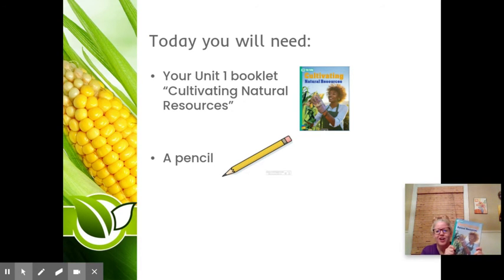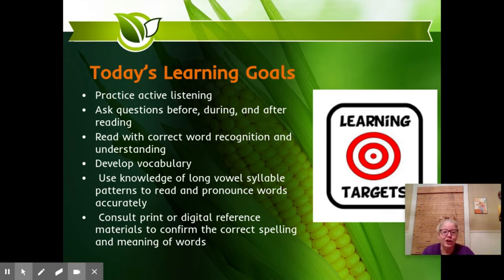Today, you will need your Cultivating Natural Resources Unit 1 booklet and a pencil. Here are our learning goals for today. We're going to practice our active listening, ask questions before, during, and after reading, read with correct word recognition and understanding, develop vocabulary, use knowledge of long vowel syllable patterns to read and pronounce words accurately, and consult print or digital reference materials to confirm the correct spelling and meanings of words. So we have a lot to get to today.